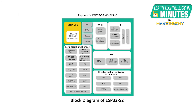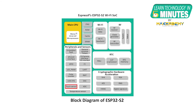The system clocks include the CPU clock, the RTC clock, and the audio PLL clock. The analog peripherals in the SoC include two 12-bit ADCs, two 10-bit DACs, a temperature sensor with a range of minus 20 to plus 110 degrees Celsius, and 14 capacitive sensing GPIOs acting as a touch sensor.